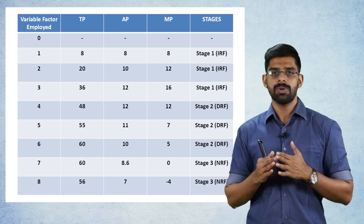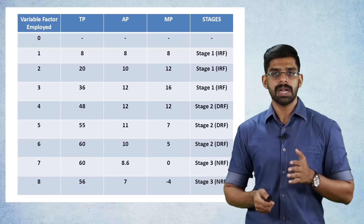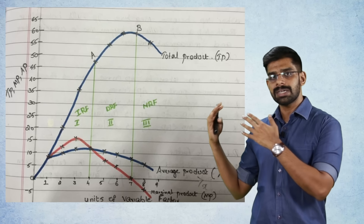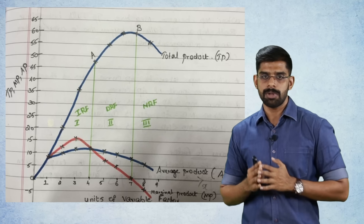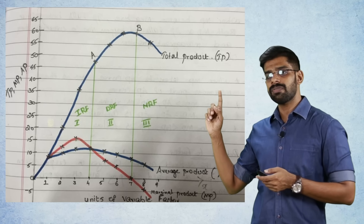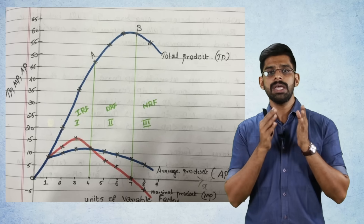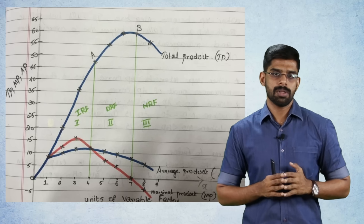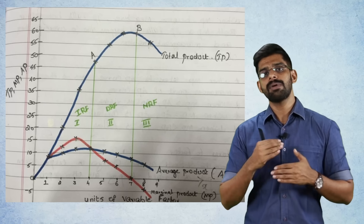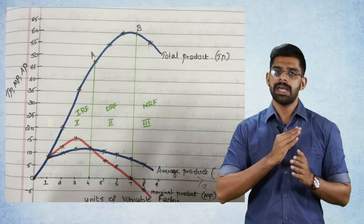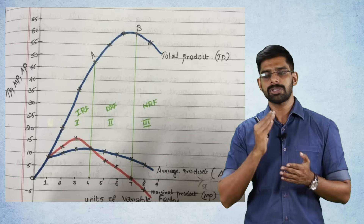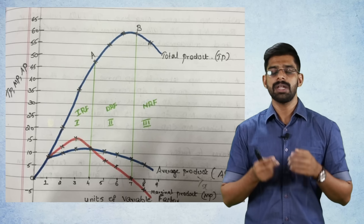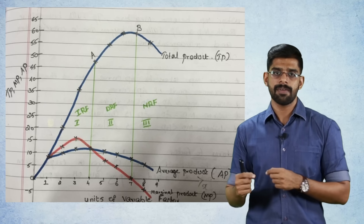The law of variable proportion involves three stages based on total product, average product, and marginal product behaviour. The three stages are: increasing returns, decreasing returns, and negative returns. In the first stage, total product, average product, and marginal product all increase — this is called Increasing Returns to Factor (IRF). The key point of the first stage is when Average Product equals Marginal Product.